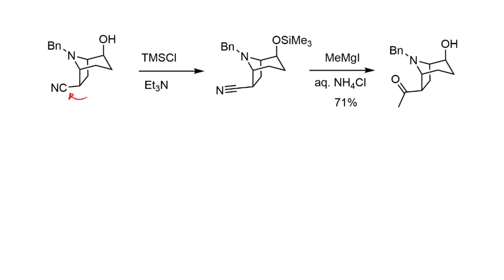The next reaction is a Grignard with methylmagnesium iodide, which adds into the nitrile — methyl anion pushes electrons onto nitrogen — giving an imine intermediate. This is particularly unstable and hydrolyzes on workup. Aqueous ammonium chloride was chosen as mild workup conditions given concerns about the acid/base sensitivity of the molecule. This hydrolyzes the imine back to the ketone, and in the same step the TMS ether is also cleaved to regenerate the hydroxy group.